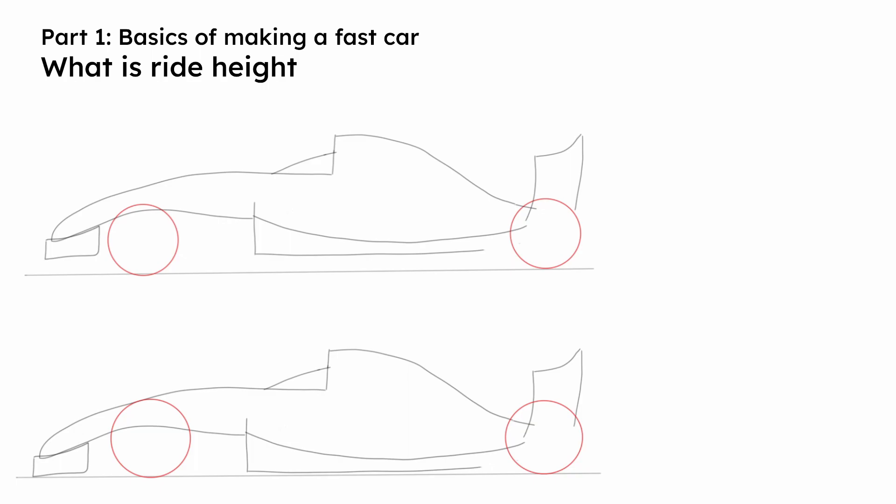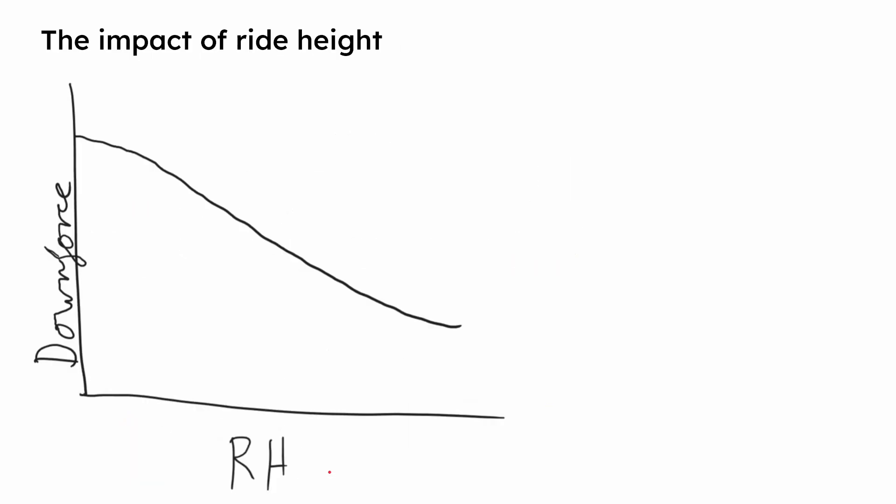Ride height is how far the car is sitting above the ground. The top image is an exaggerated example of a high ride height, with the bottom being a much lower ride height. Ride height is an important aspect of car performance as it has a significant impact on downforce, and in F1 there's the expression which is downforce is king. The graph above is showing that by having the lowest front ride height possible, that maximizes the downforce.